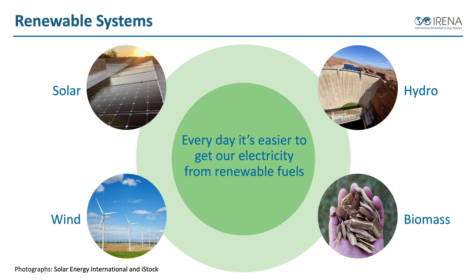Every day it's easier to get our electricity from renewable fuels. Solar energy is the focus of this course. Hydro power has been around for a long time — some of the biggest and earliest large-scale utility power plants were originally hydropower based. Things like biomass, in areas where we have different availability of materials, can be used to generate steam, run steam turbines, and produce electricity. Wind power is something that we've been harnessing as humans for a long time, and it's amazing to see how utilities have harnessed large-scale wind power plants while costs continue to reduce.